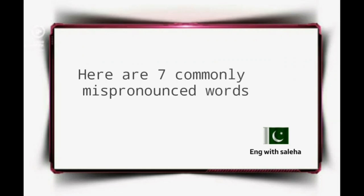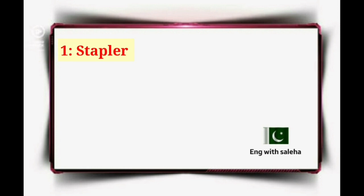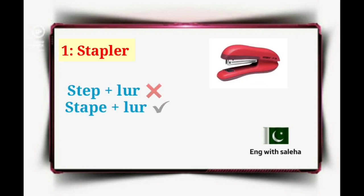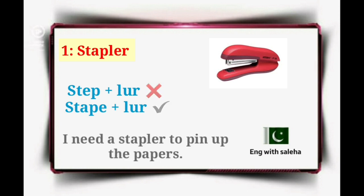Here are 7 commonly mispronounced words in English. Number 1: STAPLER. It's not 'stapler' — it's 'stapler.' Example sentence: I need a stapler to pin up the papers.